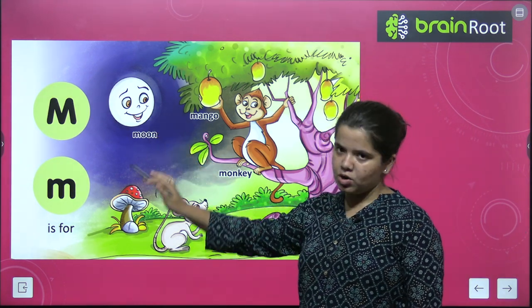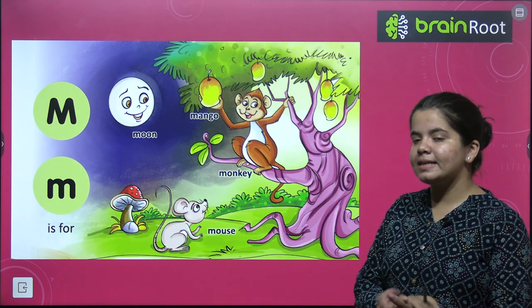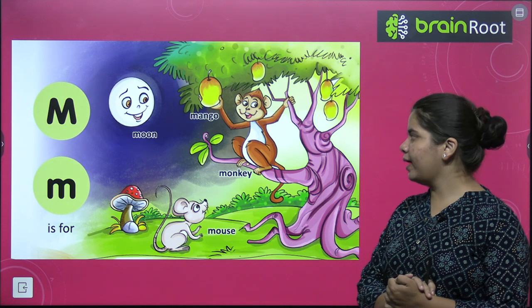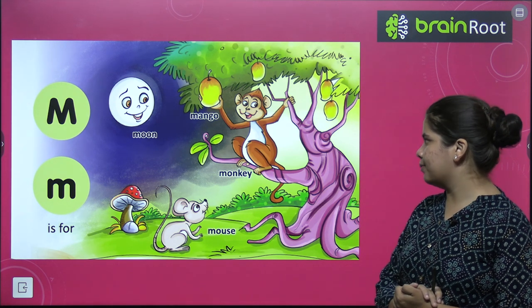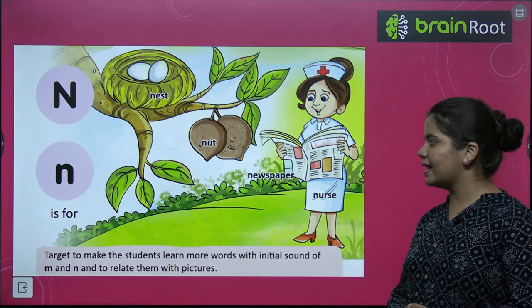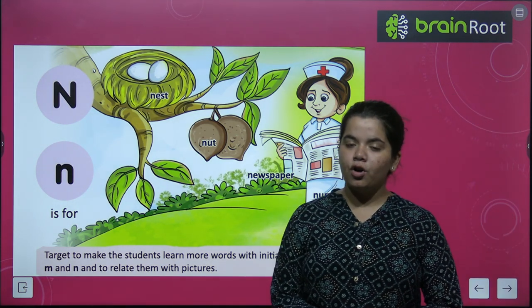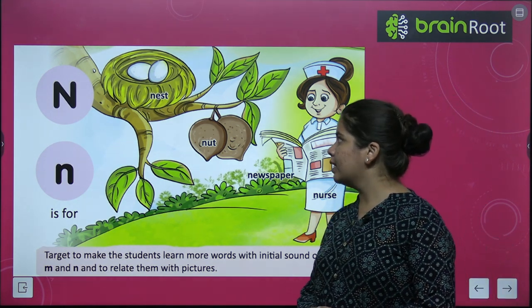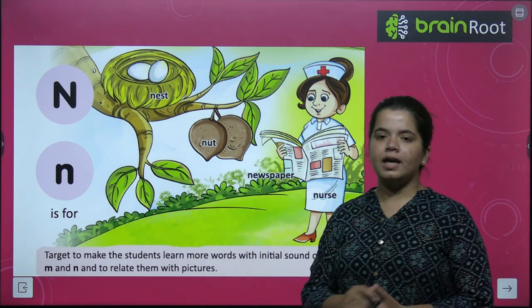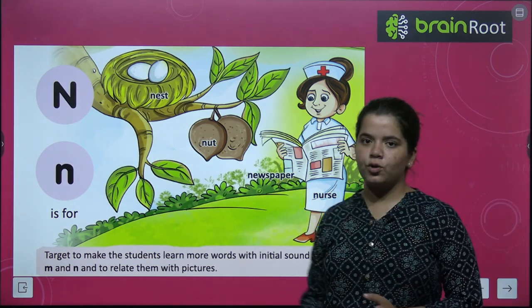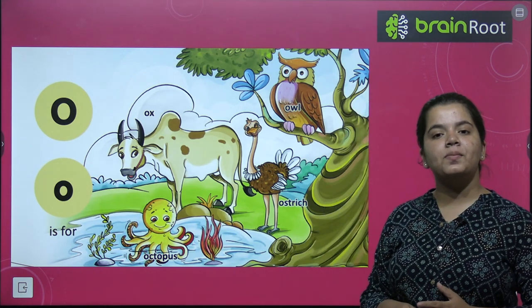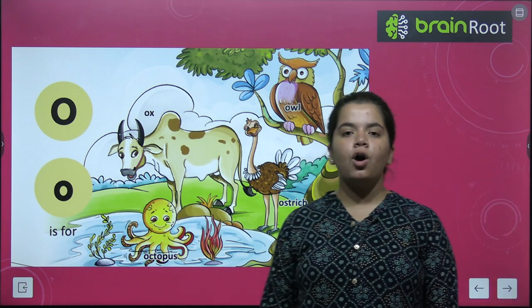Next is M. Capital M aur small m — aapko dono dekhne hain saath saath. M for moon, M for mango, M for monkey, M for mouse. Next hai N. N for newspaper, N for nest, N for nut, N for nurse — jo aapko hospitals mein ya doctor ke clinics mein milte hain, unko hum nurse bolte hain.